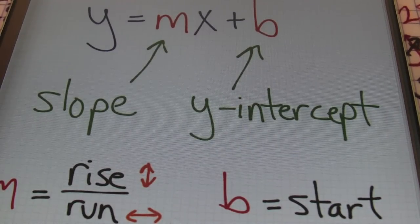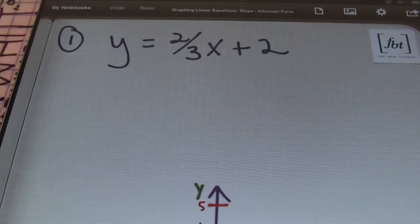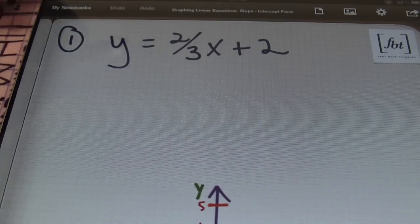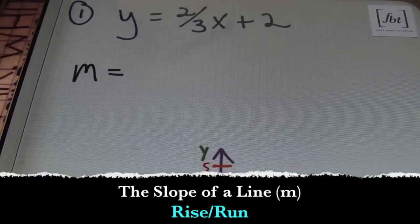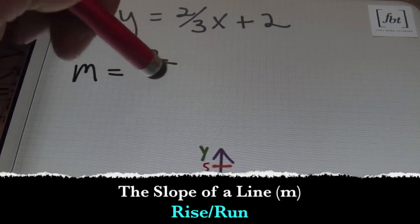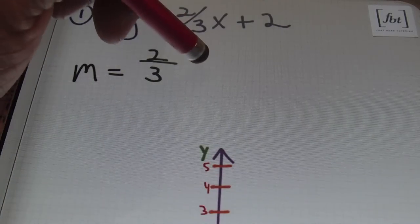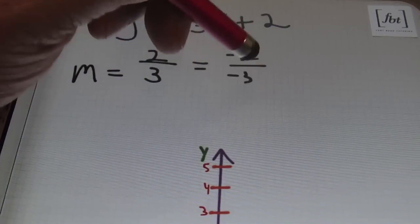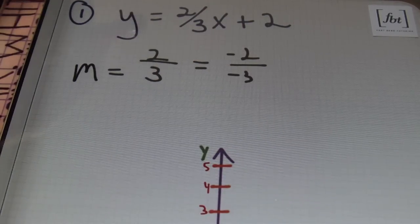Let's go ahead and look at some problems. In our first example, I have Y equals 2/3 X plus 2. Notice how this is in the same format as Y equals MX plus B. You want to get your slope value — it's going to be the coefficient of the X term, that number in front of X, which is going to be two-thirds. That's your slope: a rise value of 2 and a run value of 3. Note that it is also possible to graph this using negative 2 over negative 3, because a negative divided by a negative is a positive, so either form of the slope will be fine.